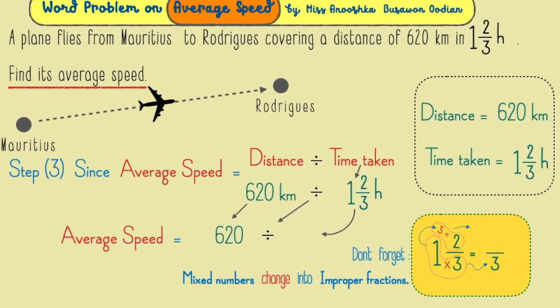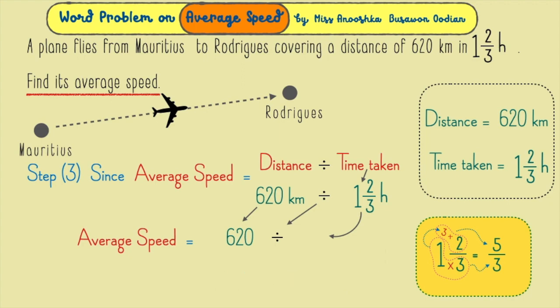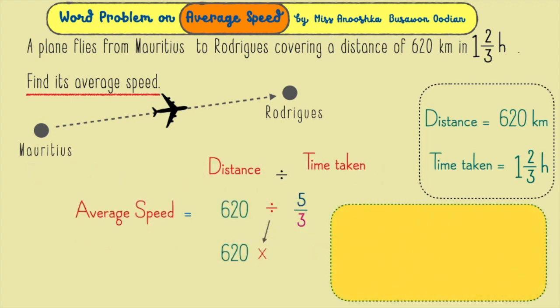Now, we have turned the mixed number into 5 over 3. We can then proceed to the division. Another issue that may arise is division by fraction.